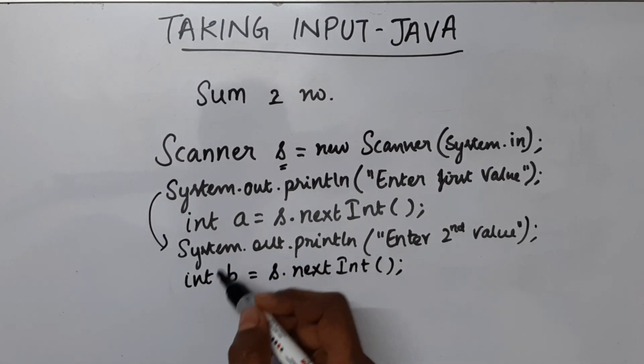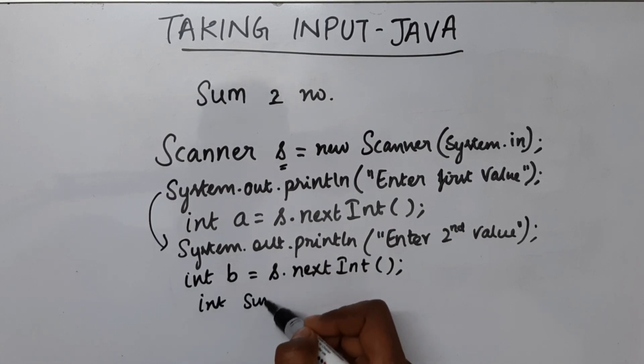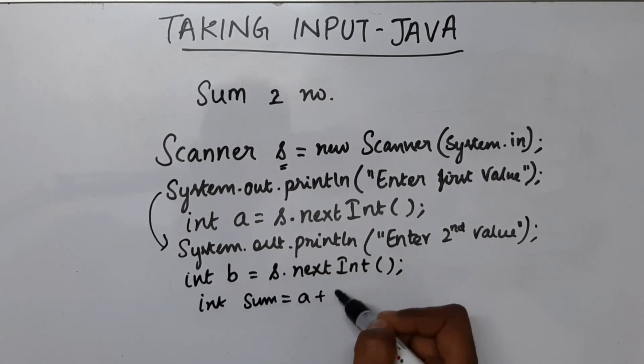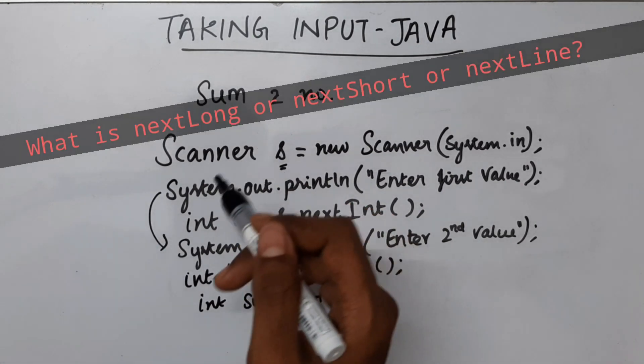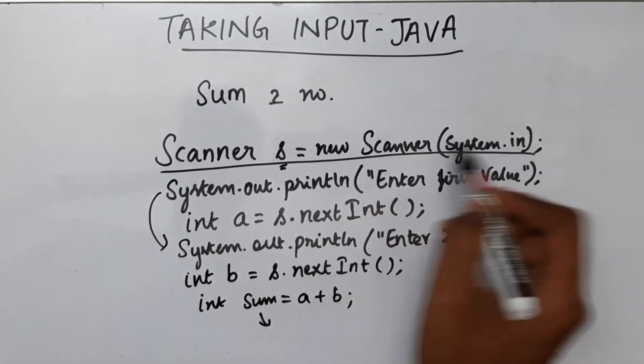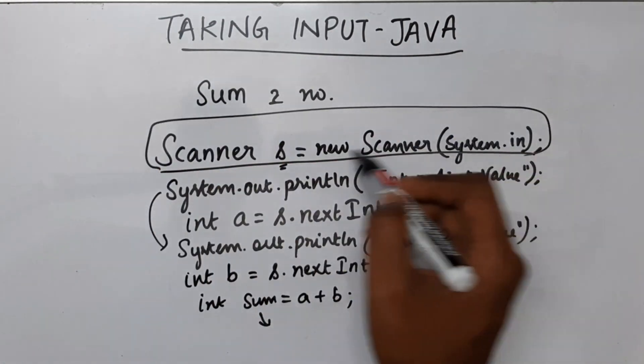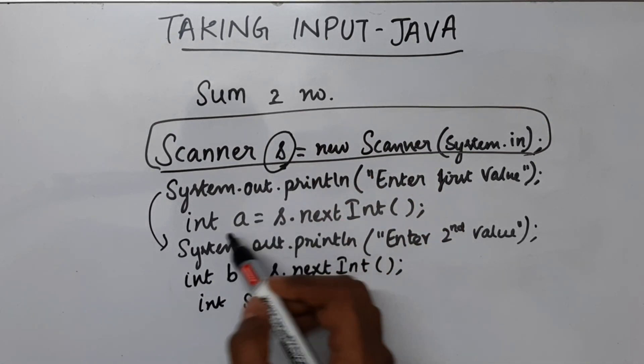So now what we can do is we can find the sum of these two values if needed. And then of course we will print this. So this is how we are going to take input from the user. First you have to use Scanner class. We have to create an object of this class, using this object we are going to take input.